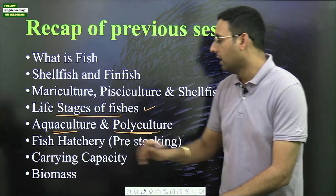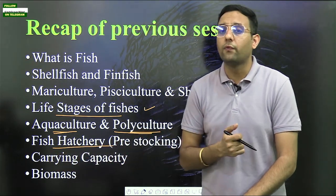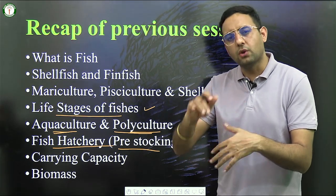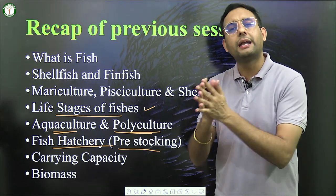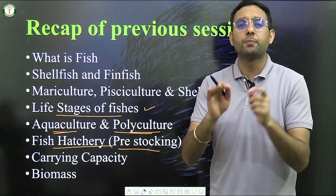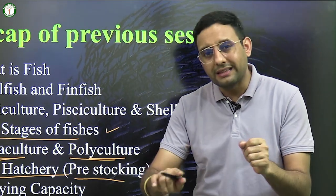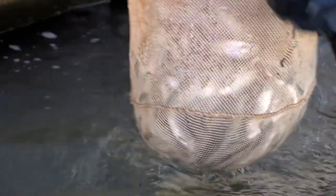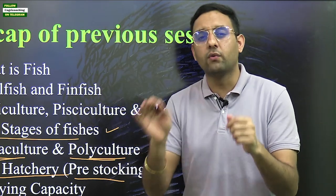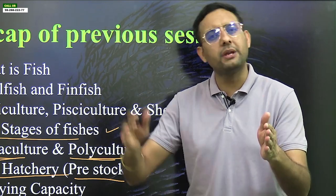We also studied fish hatcheries. A fish hatchery is where fishes are reared at the initial stage, and it is part of pre-stocking. Once the fish reaches fingerling size, it is moved to the table fish production pond, which is considered post-stocking. So there are two kinds of ponds in fish farming: pre-stocking, which is the hatchery, and post-stocking, where fishes are reared to gain weight before being sold.